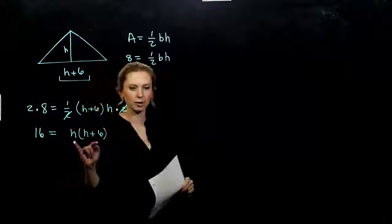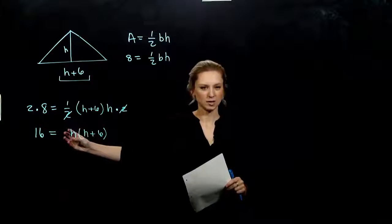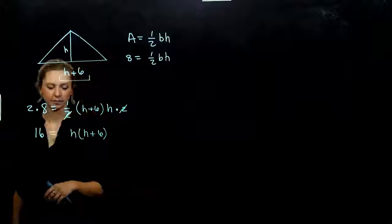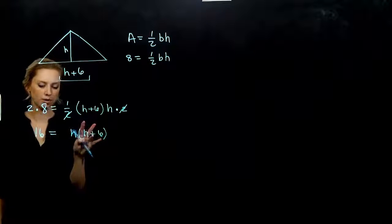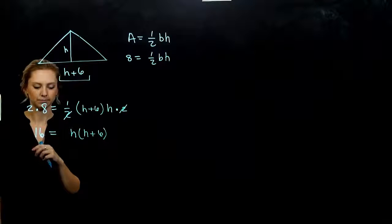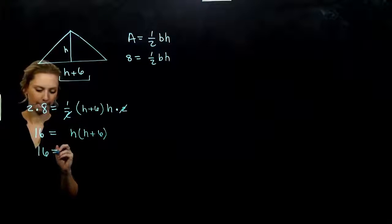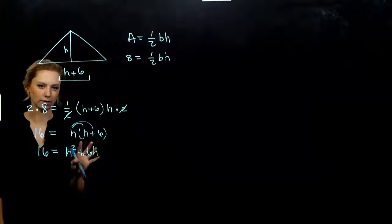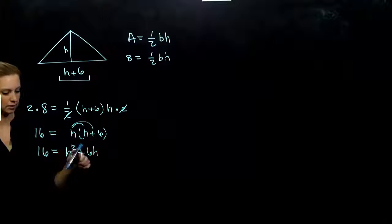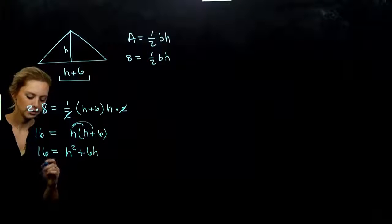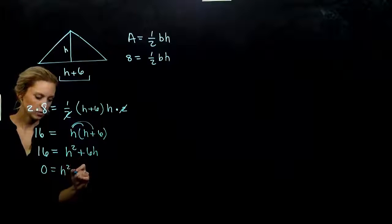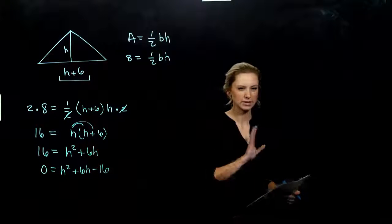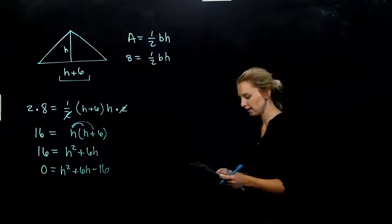We need a plain trinomial set equal to zero. Distribute h in: we get h squared plus 6h on the right, and 16 on the left. Move 16 to the other side by subtracting, keeping the leading term positive. We get: h squared + 6h − 16 = 0. Everything is on one side equal to zero, and now we can try to factor.